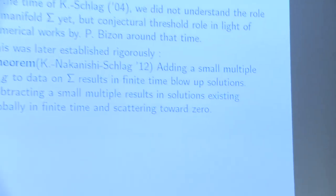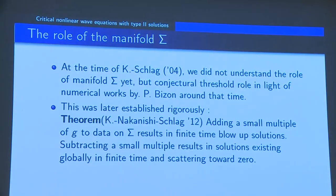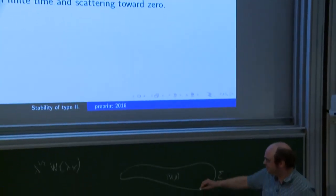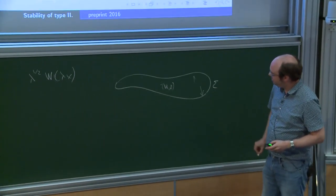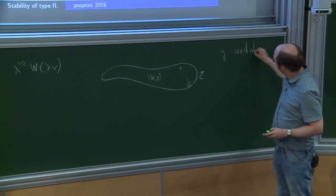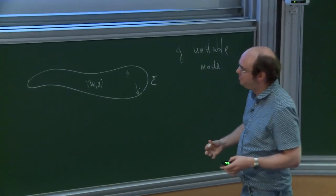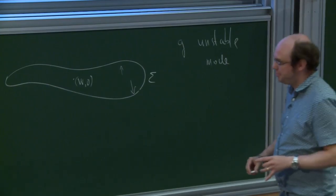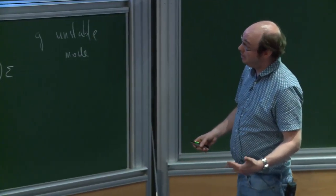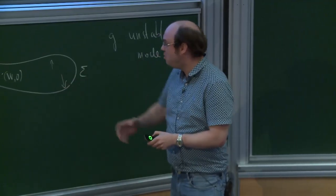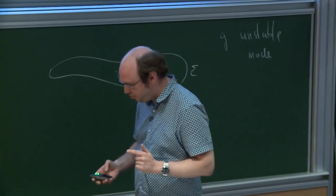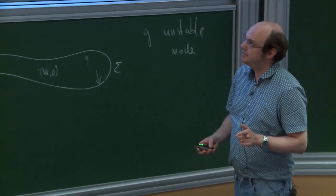A couple of years later — actually eight years later — we realized that one can show directly that if you perturb the initial data on this hypersurface sigma, either above or below — by adding a multiple of the unstable mode — you can actually trap the corresponding solution in two totally different regimes. If you go above, your solution is going to blow up; if you go below, your solution is going to scatter toward zero. To prove the scattering-to-zero part, we had to use the Duyckaerts-Kenig-Merle theorem.